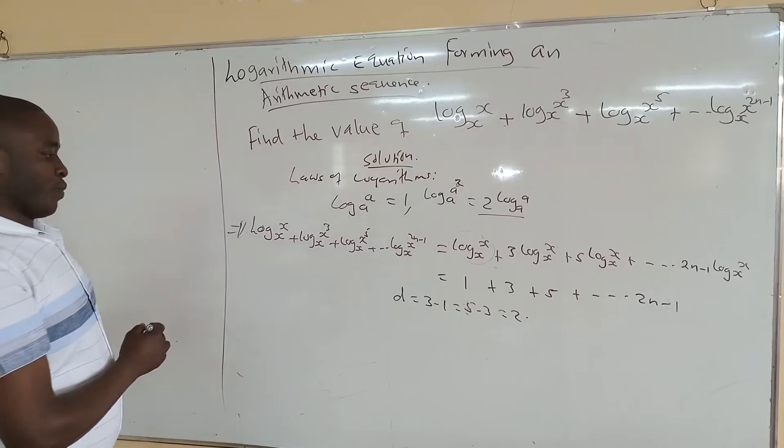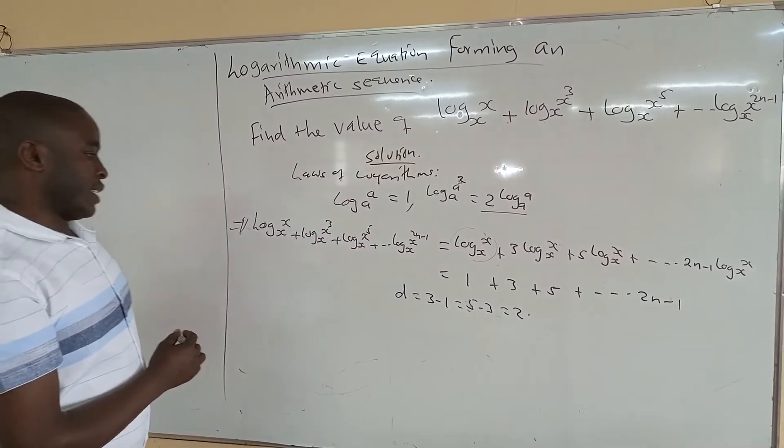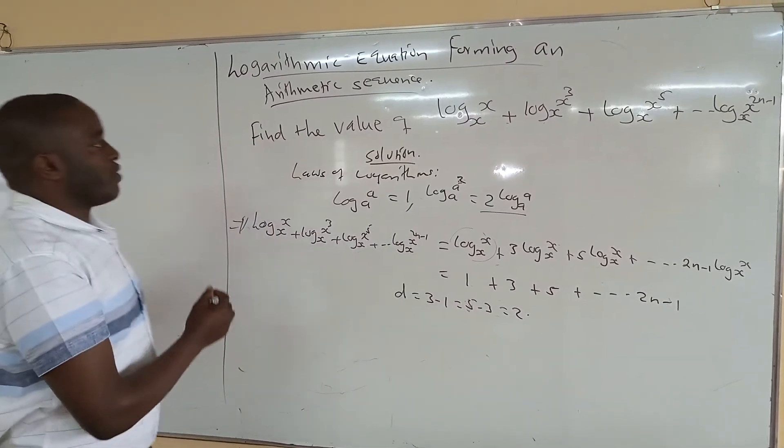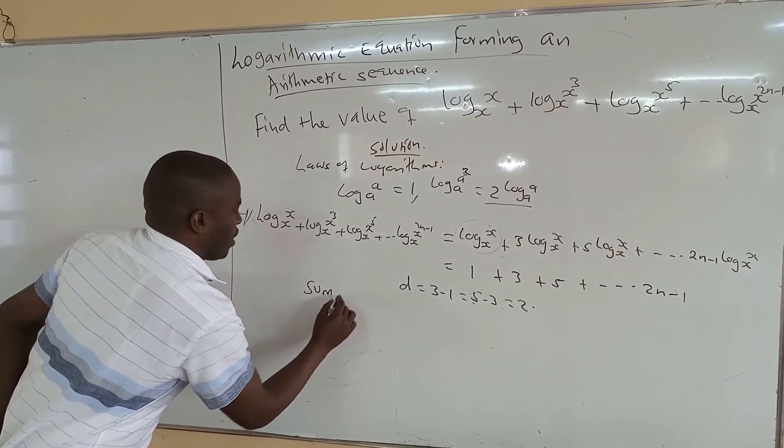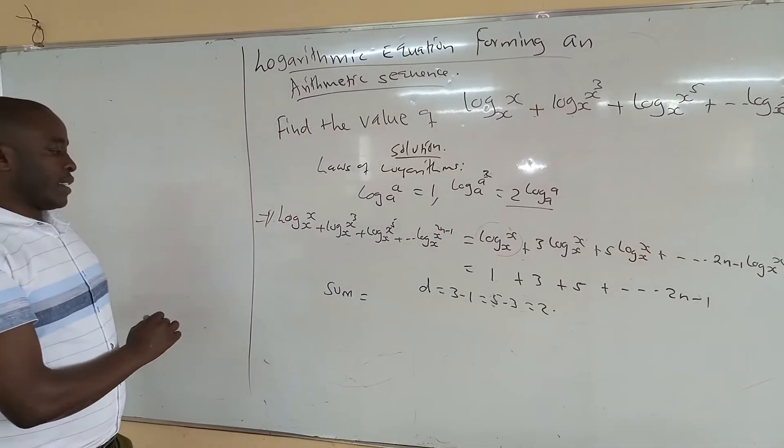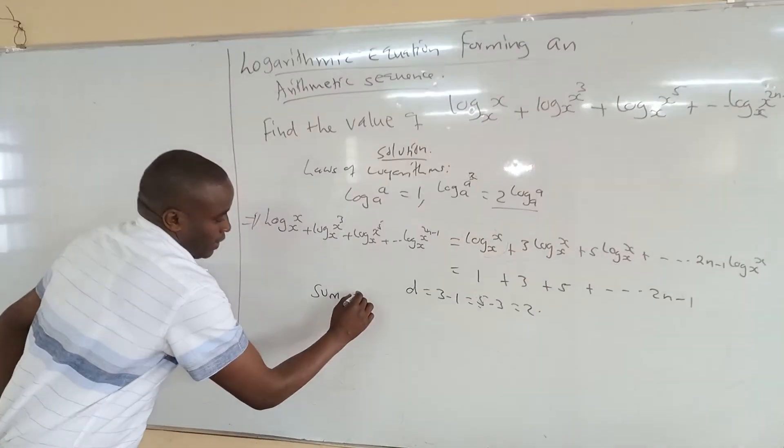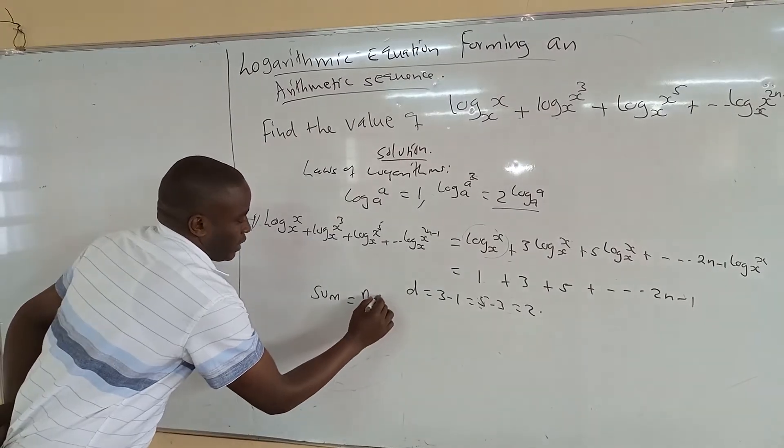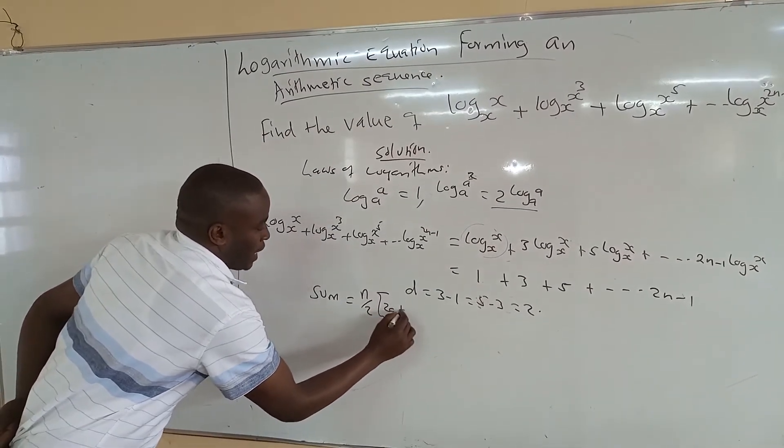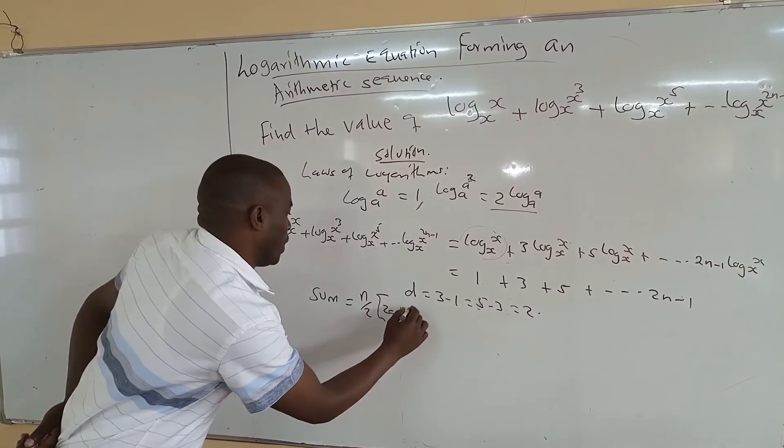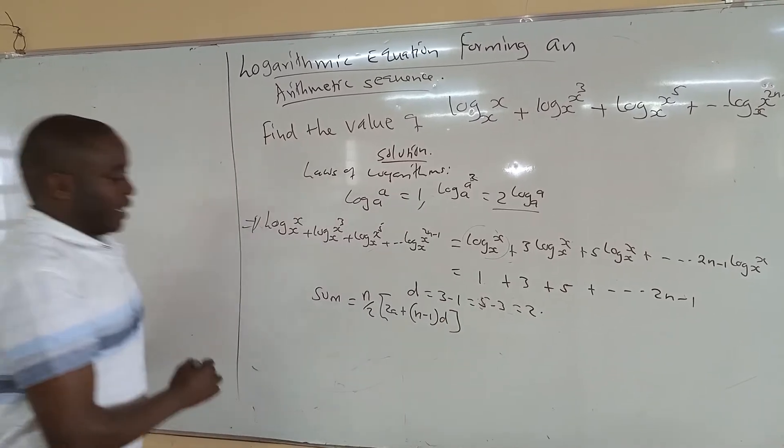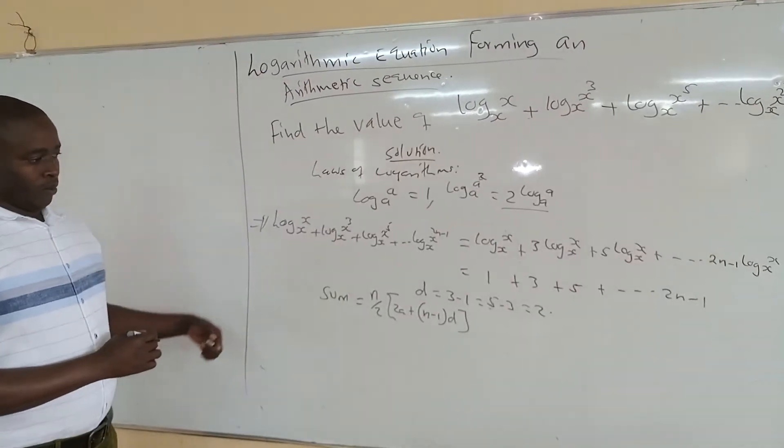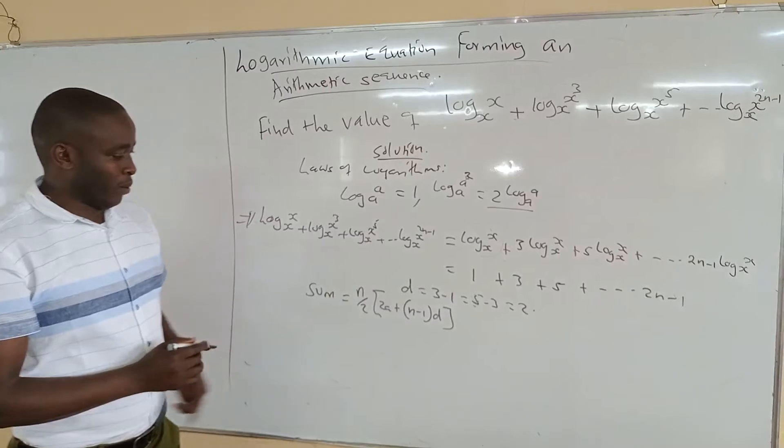So if we know the difference, remember what we are interested. So this is, we are interested with the value, which is the sum. So we need to find the sum. Sum, we have two formulas. To find the sum, we usually say it is n over 2 into 2a plus, 2a plus into brackets n minus 1 into d. That is when you are finding the sum and you know the number of terms.